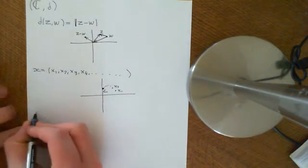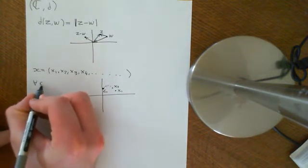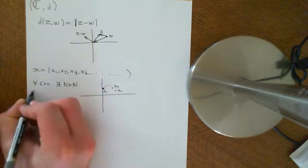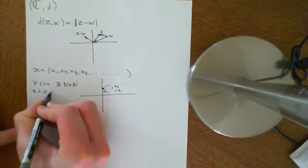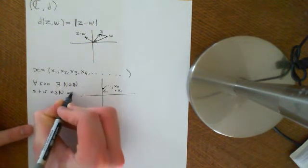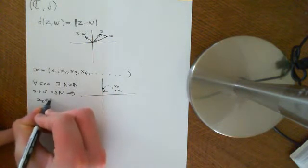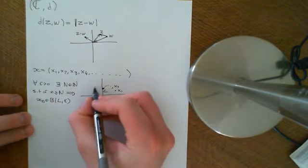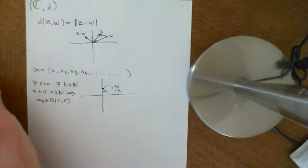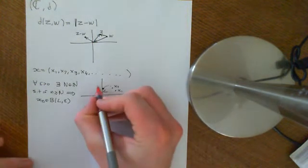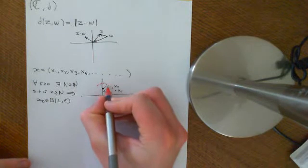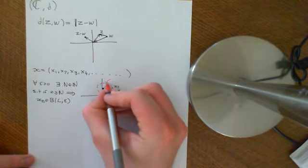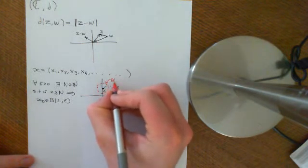It means that whatever epsilon you give me — for all epsilon greater than 0 — there exists a big N which is an element of the natural numbers, such that if little n is greater than or equal to big N, it implies that x-sub-n is an element of the open ball around the point L of radius epsilon. So if I draw an epsilon ball — often in complex analysis these are referred to as epsilon disks or open disks of radius epsilon — if I draw this open disk, which is an open ball in the complex plane...